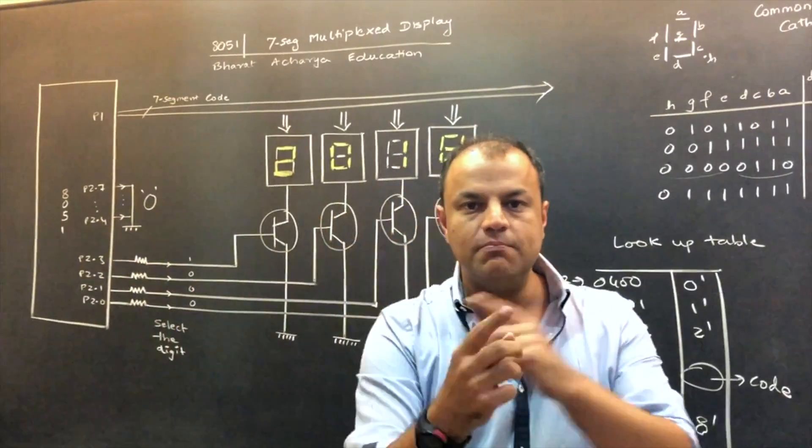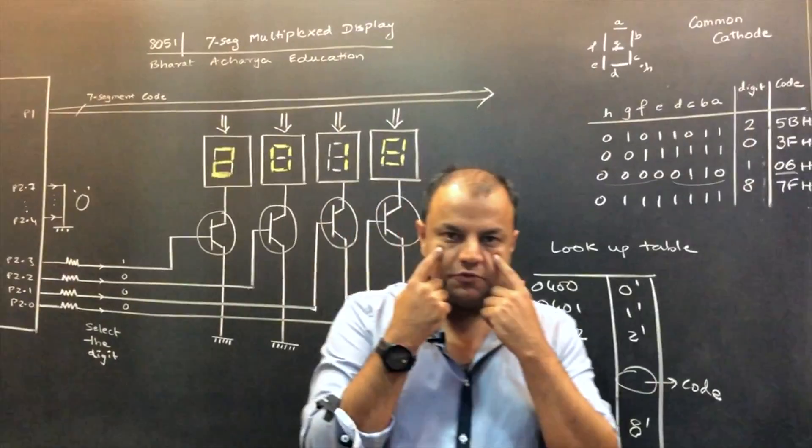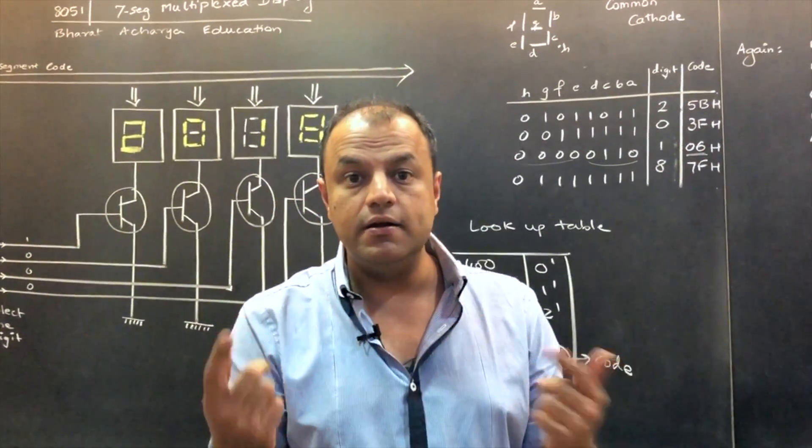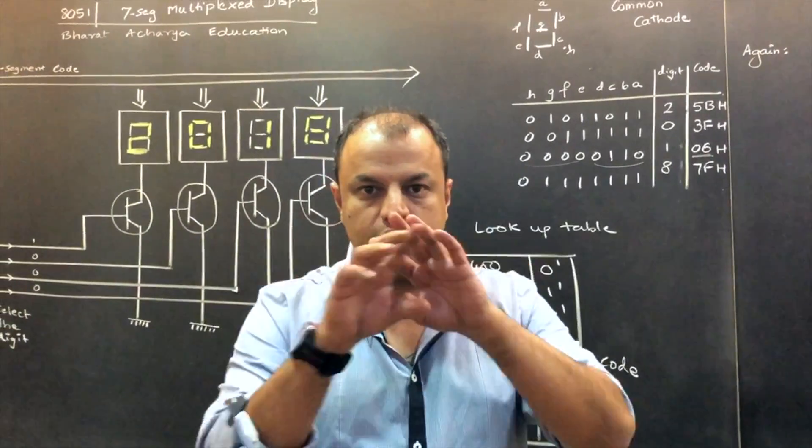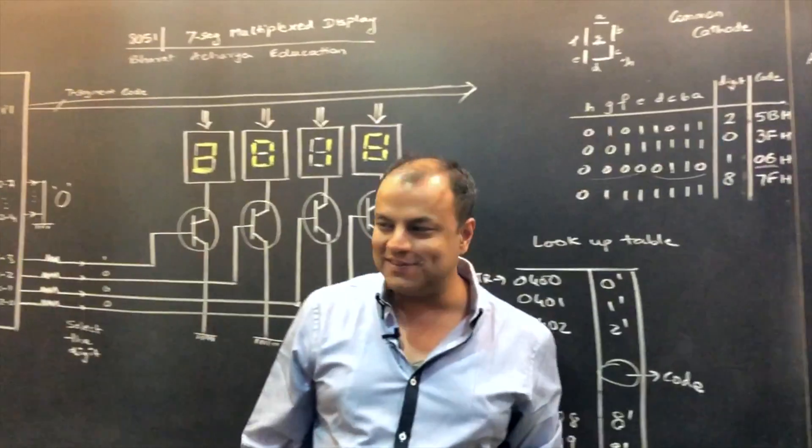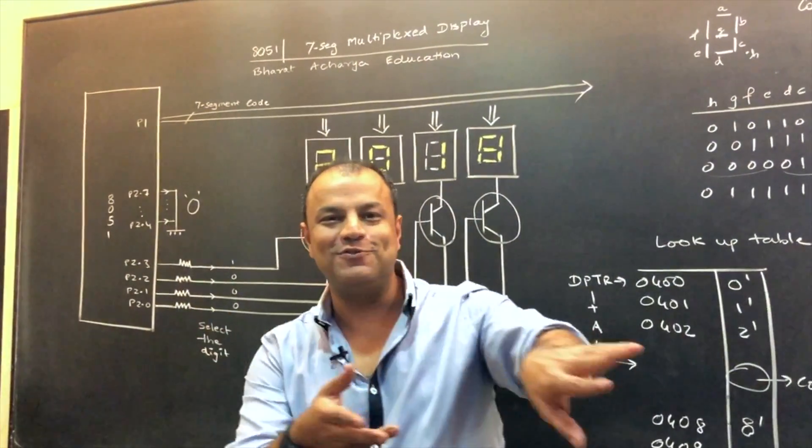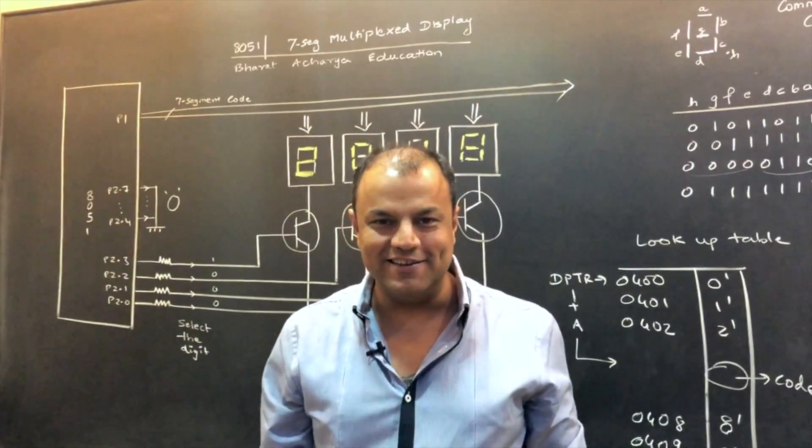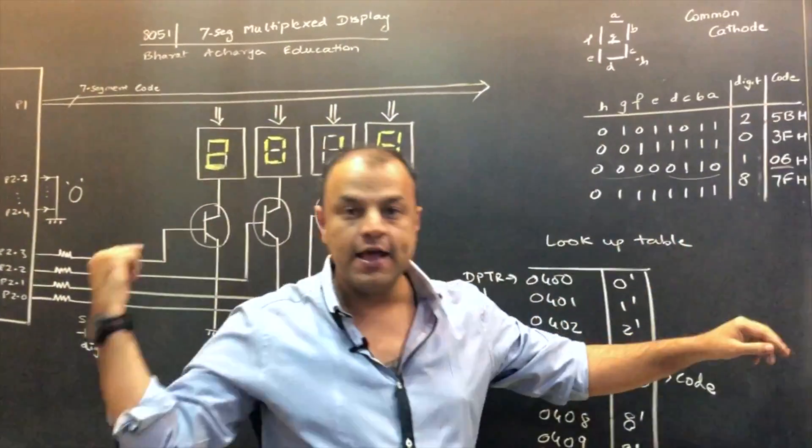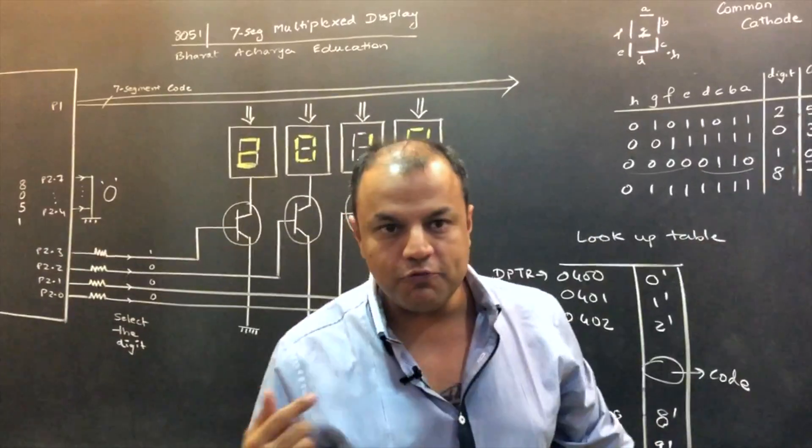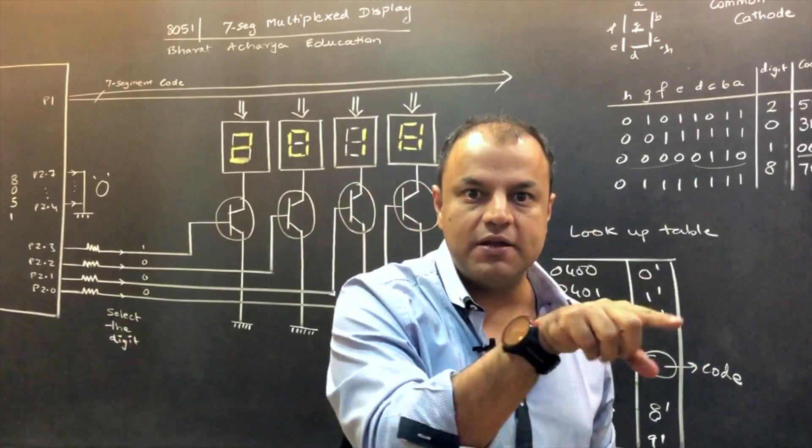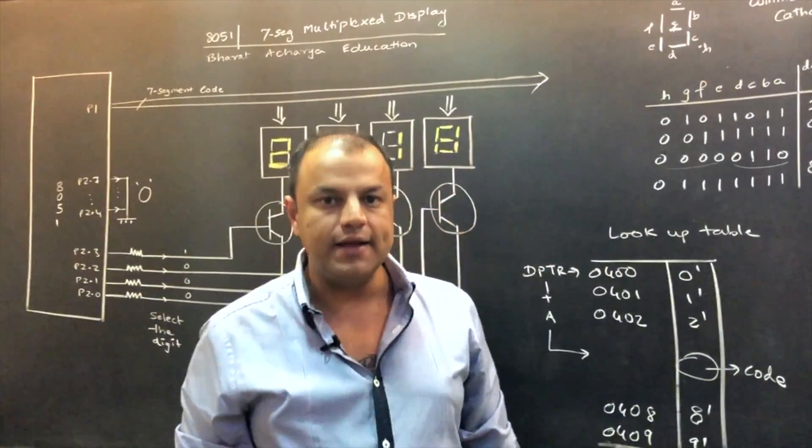You do this one by one in a loop so fast that because of persistence of vision, the naked eye cannot detect that they are being turned on one by one. For us, all the four digits are on together, but actually they're not on together because it's common sense. A processor cannot send all the four codes at one time. It's simple idea. Processor will send the code of 2, then 0, then 1, then 8. Come back and send 2. How fast? Before your eye could realize that 2 came, then 0 came, then 1, then 8.